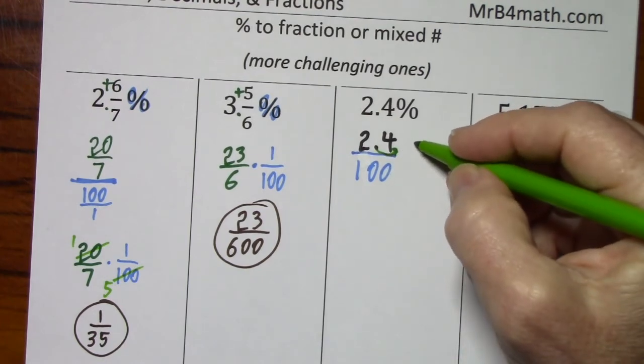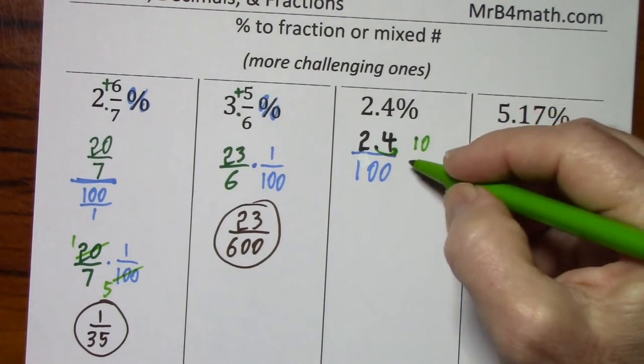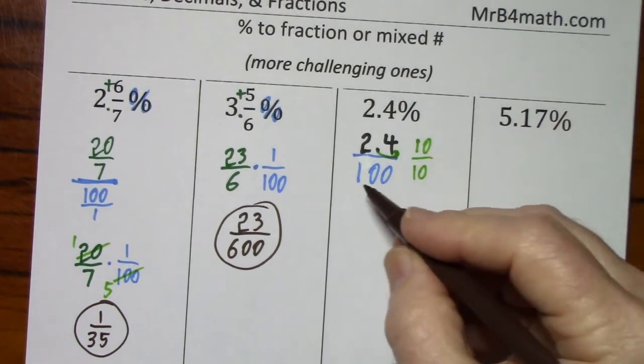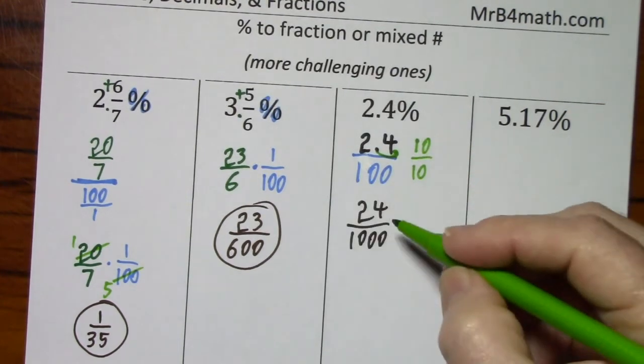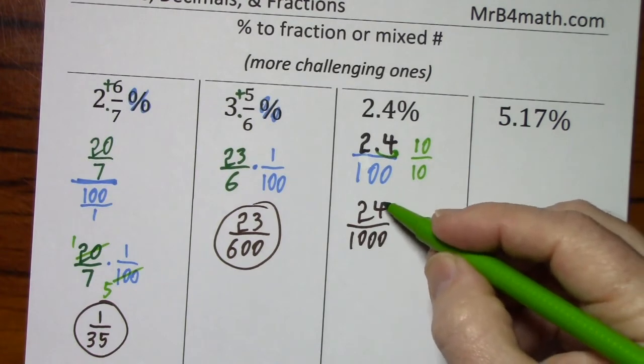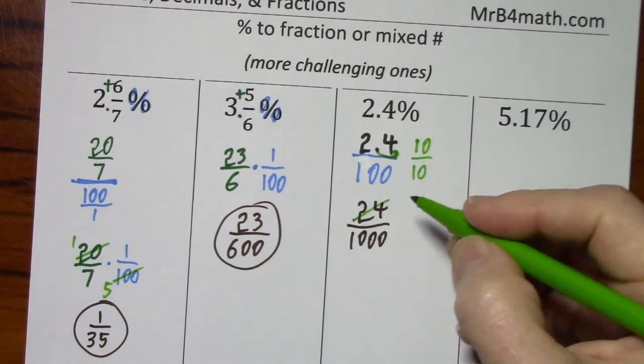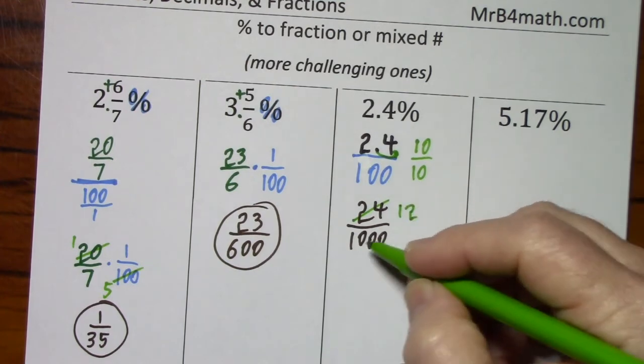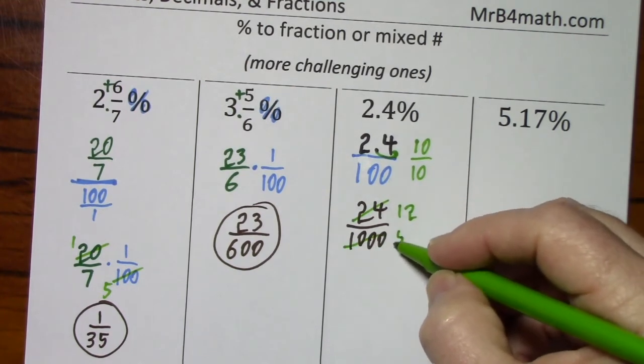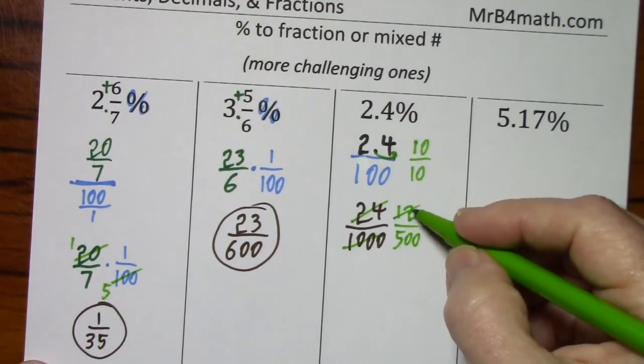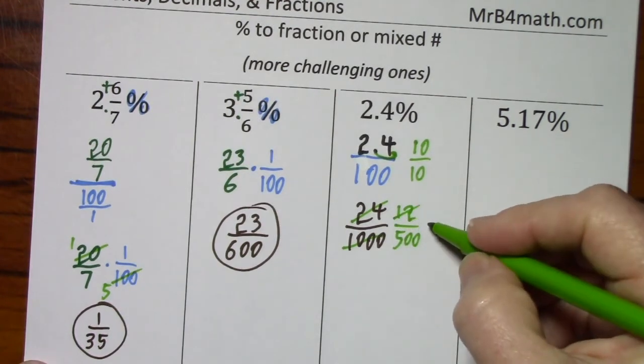So I need to move this decimal to the right. That means I need to multiply by 10. And of course, you have to do the same to the denominator. So you end up with 24 one thousandths. And this will reduce. You have even over an even. So cut it in half gives you 12, cut it in half is 500.